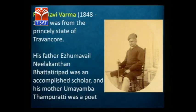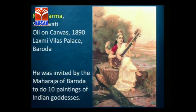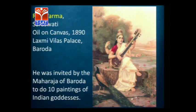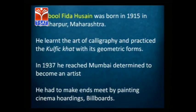Ravi Varma was born in the princely state of Travancore. He belonged to an educated parenthood and is considered the first individual artist of Indian modern art. He painted images of gods and goddesses. He was invited by the Baroda Maharaja and painted several works there — ten paintings of Indian goddesses — as well as mythological stories such as from the Ramayana.